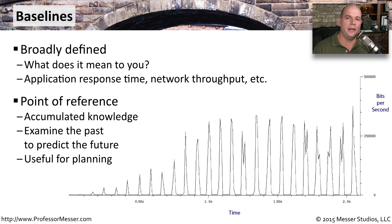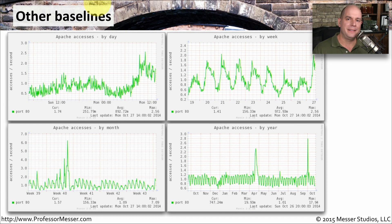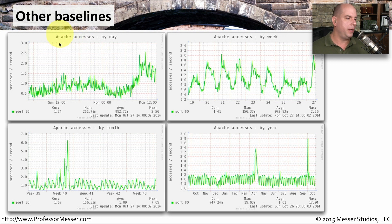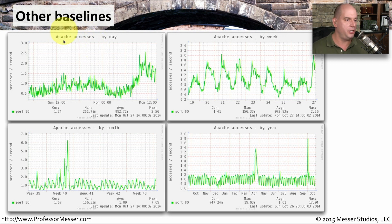Instead of wasting money and over-engineering the network, we can create a network that's perfectly sized for our purposes. I run baselines on the Professor Messer websites, on my load balancers, on my database servers — I try to get an understanding of what's happening. I grabbed one of these baselines just to give you a feel for some of the things that I look at. This is a baseline showing how many people are accessing my web server, this Apache web server, and I've broken it out by day, by week, by month, and by year.